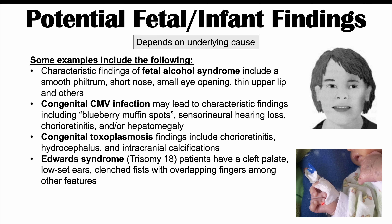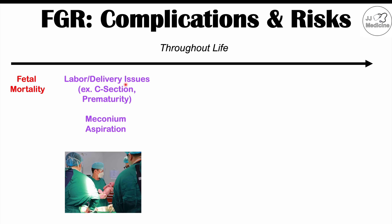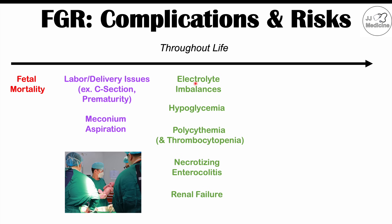Regardless of the cause, fetal growth restriction carries complications that can occur early and throughout life. These include increased risk of fetal mortality, labor and delivery issues such as higher likelihood of C-section and prematurity, and meconium aspiration. Other complications include electrolyte imbalances like hypokalemia, and hypoglycemia due to low glycogen stores in the liver, since the liver does not develop adequately to store glycogen as it should.